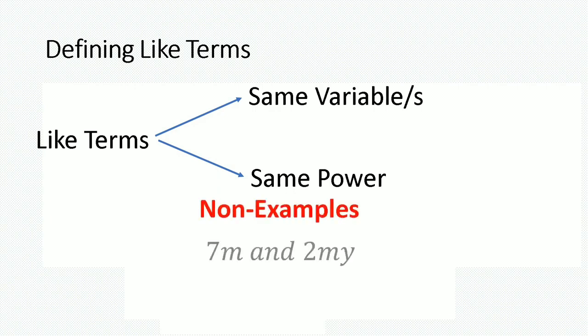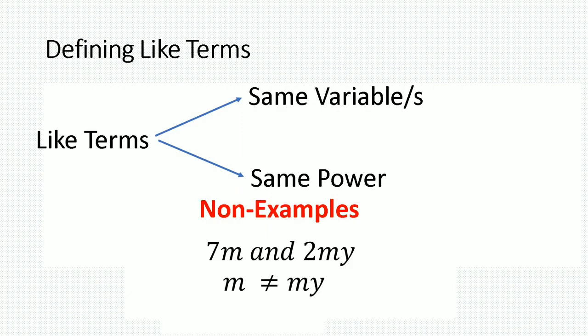Now let us look at some non-examples. If I had 7m and 2my, are these like terms? The answer is no, simply because they do not share the same variables. One has a y and the other does not have a y. Since m is not equal to my, we say that these two terms are not alike.